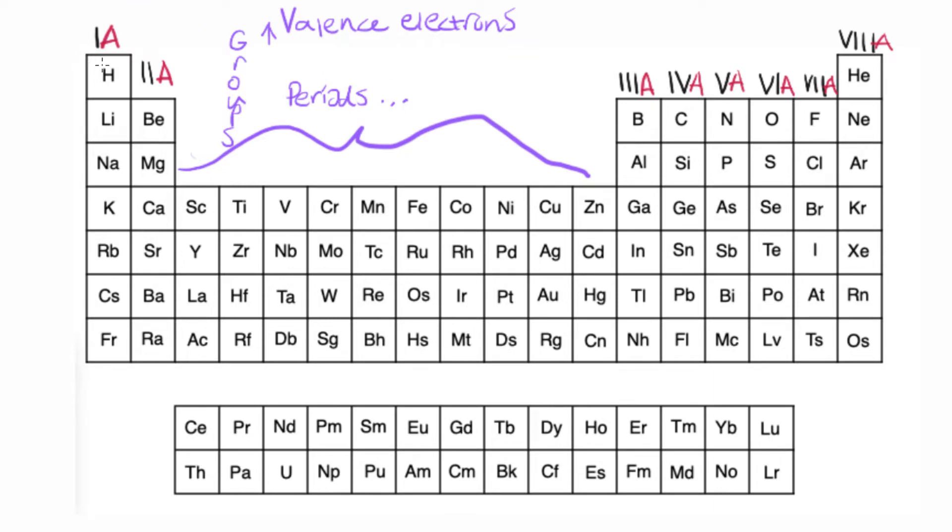So this first column or group right here is known as 1A. 1 for a Roman numeral and then the letter A. And then this group right here is 2A. And then if we start over here we have 3A, 4A, 5A, 6A, 7A, and 8A.